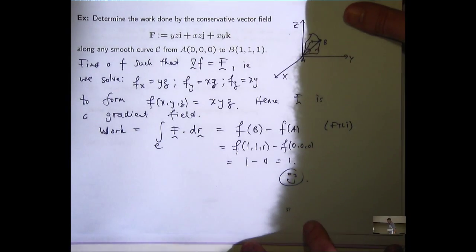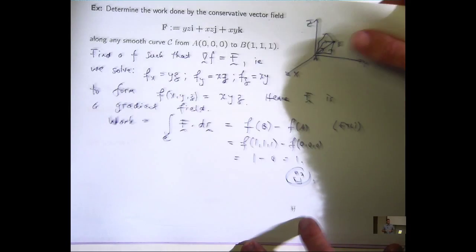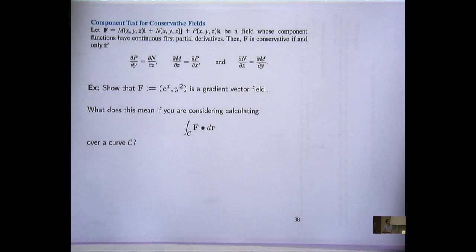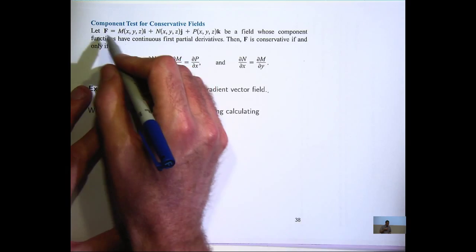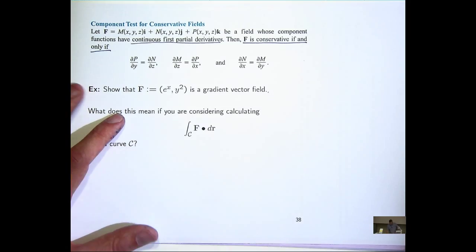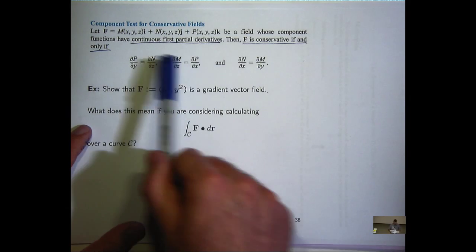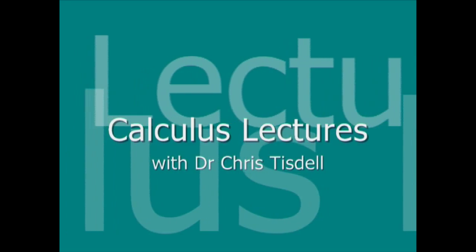So let's have a look at when the conditions, what sort of F satisfy these ideas. This is a good test for whether you have a conservative field or not. Suppose I've got a function, a vector field with functions that have continuous partial derivatives. Then F is conservative if and only if these partial derivatives are all equal.